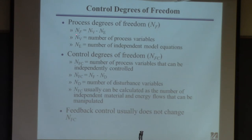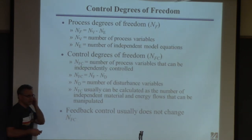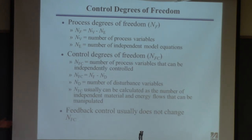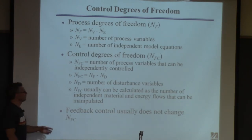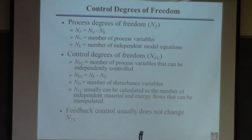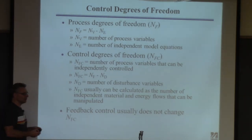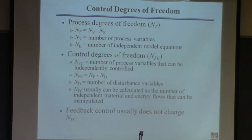The control degrees of freedom is essentially the same as the process degree of freedom. Things we can't manipulate — disturbances — reduce the amount actually available for control. The main point is there has to be some degree of freedom in the system to do control; otherwise, there's nothing to actuate. When you add a controller, the manipulated input is no longer available to manipulate directly because the controller handles it, but now you manipulate the set point to the controller — so it doesn't change the number of degrees of freedom.